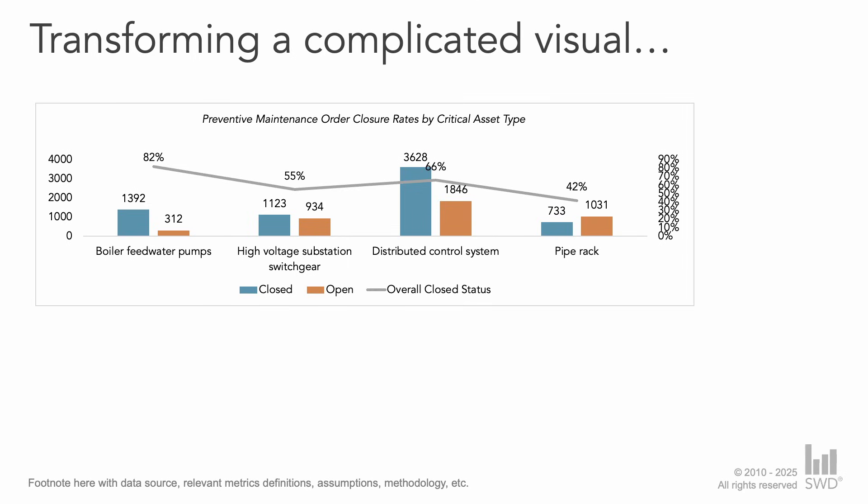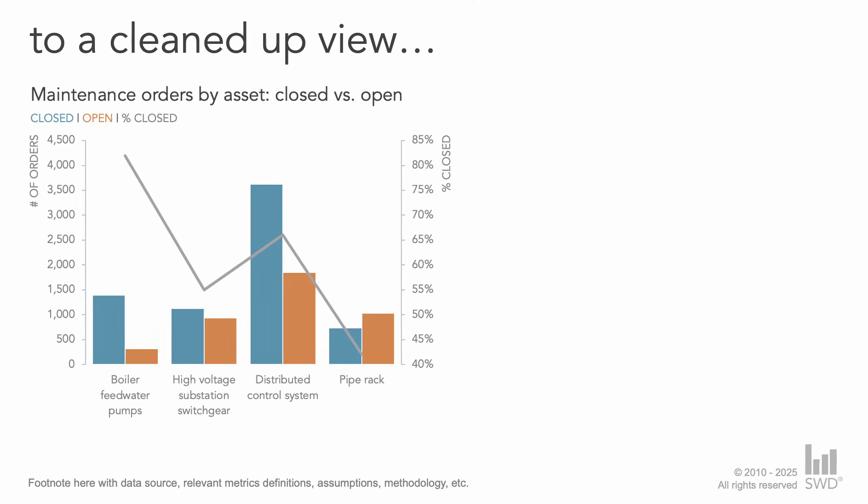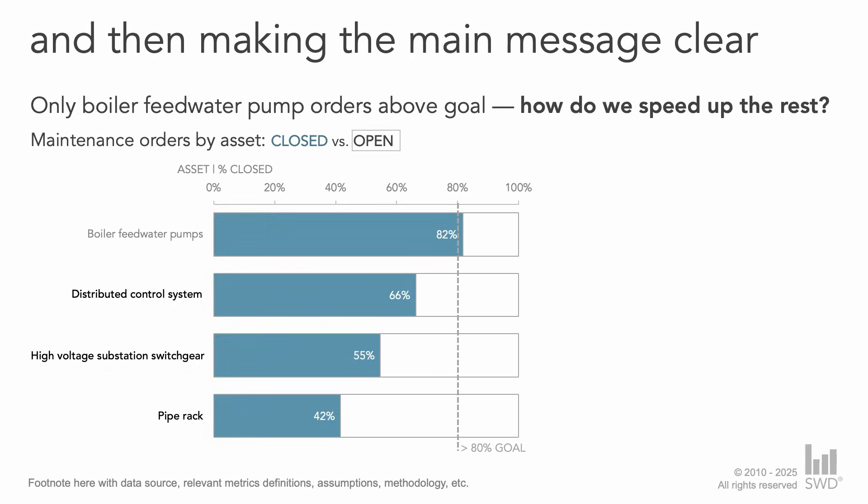Decluttering our visuals is always a great first step, but for the strongest communications, real success comes from not only sharpening those original designs but then thinking critically about the message we're looking to share and whether the graph types we've selected help support that message.